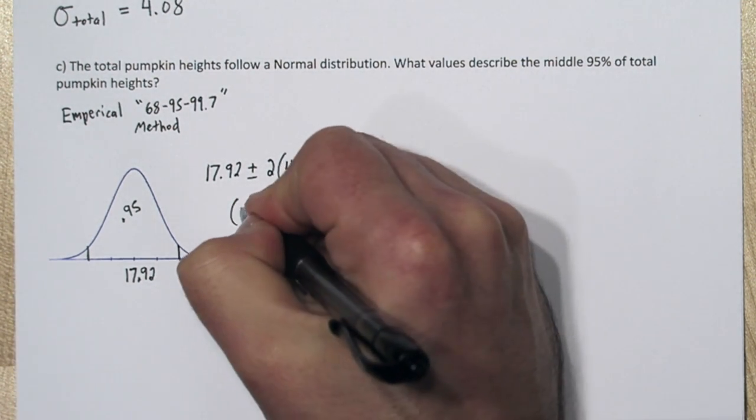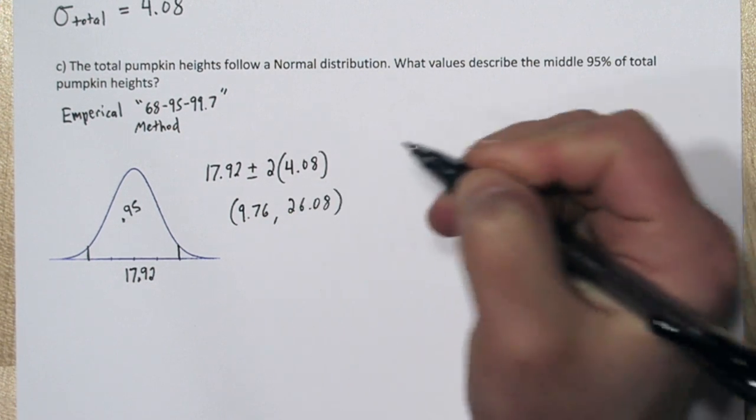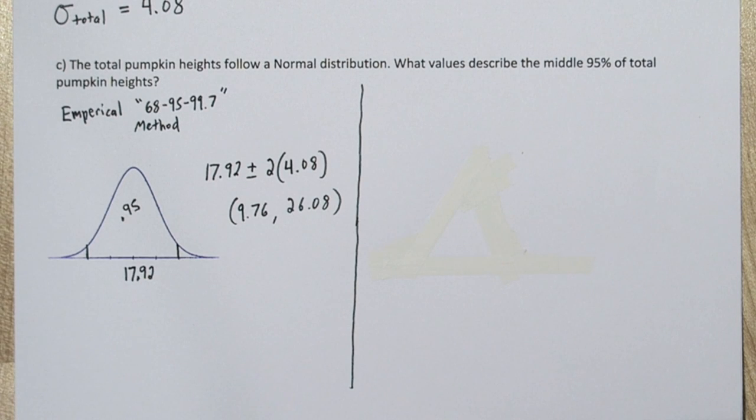we get the interval 9.76 to 26.08. We could say 95% of the pumpkins are between 9.76 and 26.08 inches in total height. But the empirical rule is just an approximation.